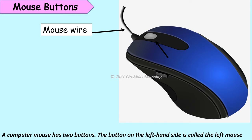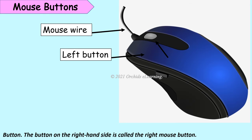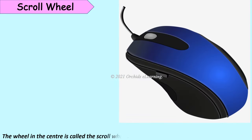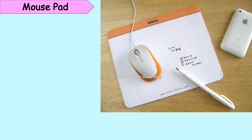Mouse buttons: A computer mouse has two buttons. The button on the left side is called the left mouse button. The button on the right side is called the right mouse button. The wheel in the center is called the scroll wheel.